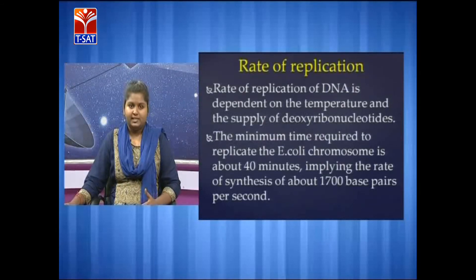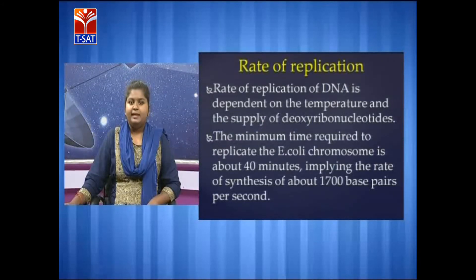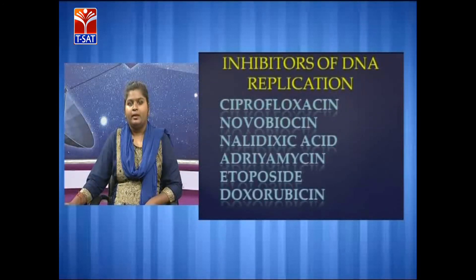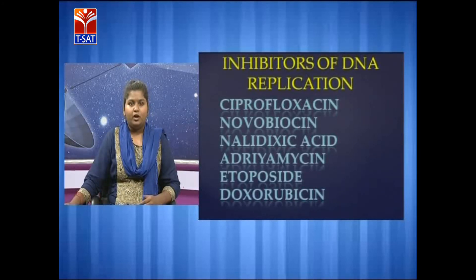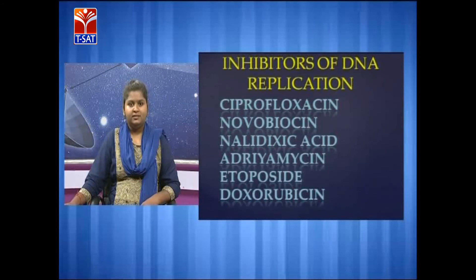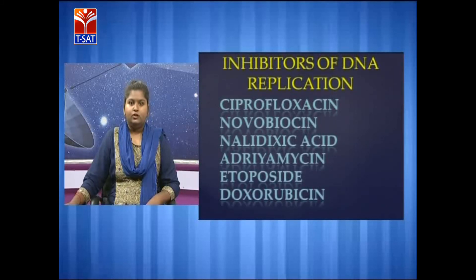Rate of replication is the synthesis of base pairs per second, and it is dependent on temperature and the supply of deoxyribonucleotides. For example, in E. coli it takes about 40 minutes for replication to complete, implying a rate of 1,700 base pairs per second. Inhibitors of DNA replication: certain chemicals inhibit the enzymes involved in the replication process, thus inhibiting replication. These include ciprofloxacin, novobiocin, nalidixic acid, adriamycin, etoposide, and doxorubicin.